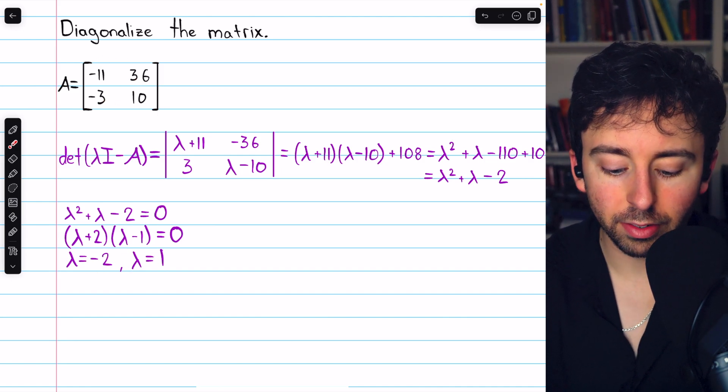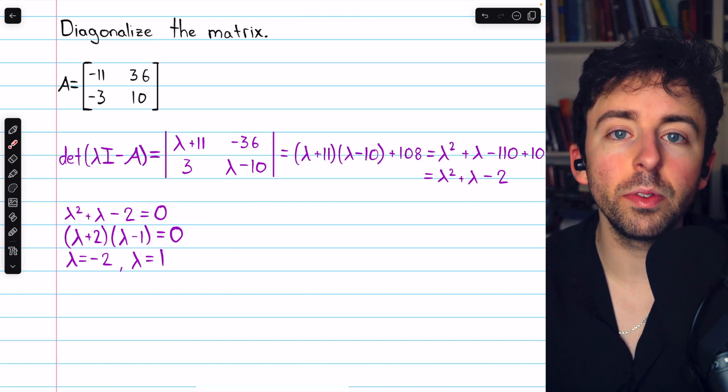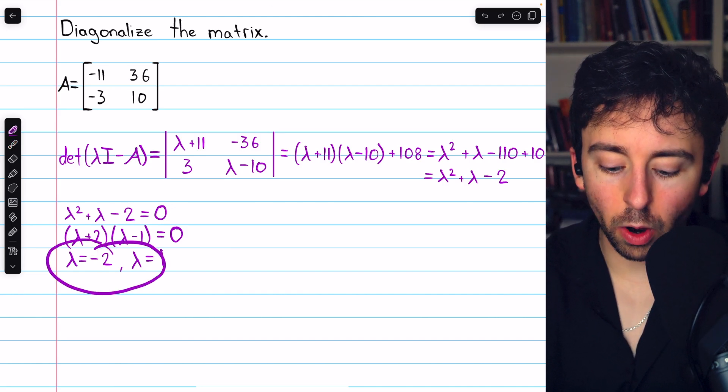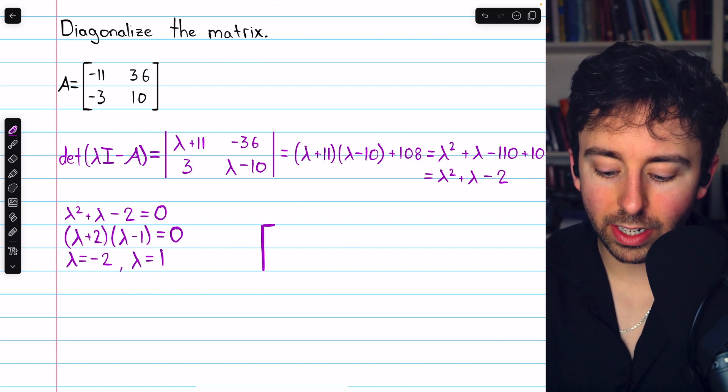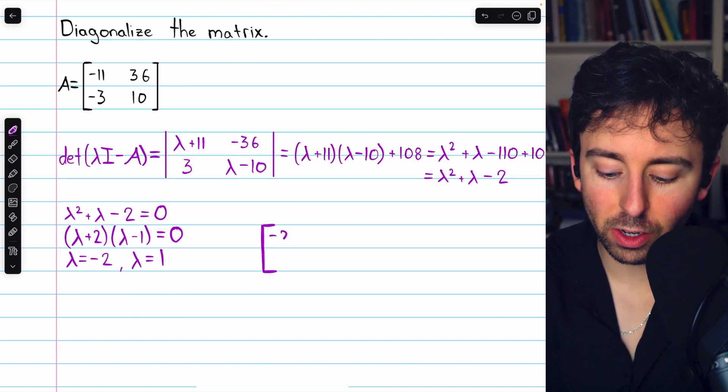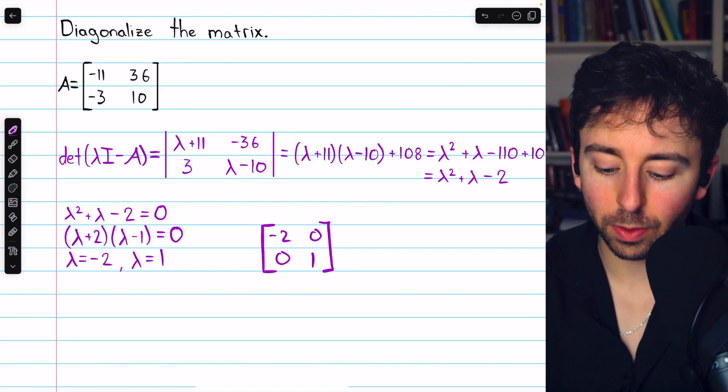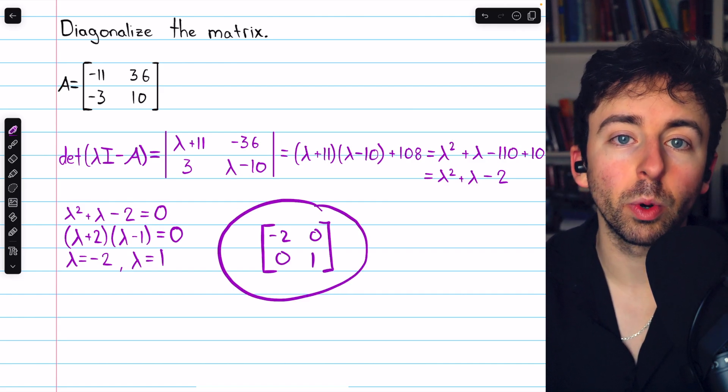This is a 2×2 matrix, so having two distinct eigenvalues guarantees it will be diagonalizable. Also, now that we know what the eigenvalues are, we already know what the diagonalized matrix will look like. It will have those eigenvalues on the diagonal.